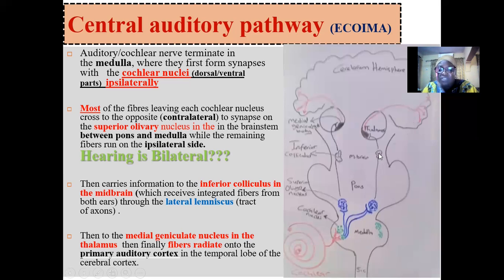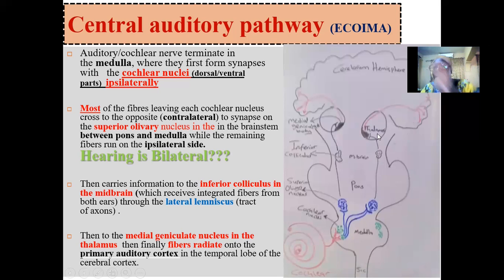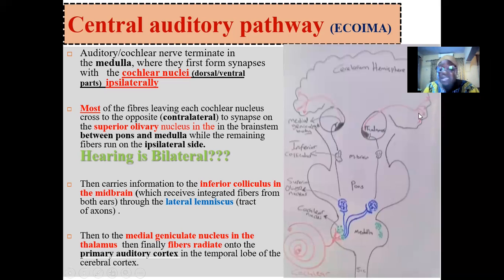After synapsing at the superior olivary nucleus, the fibers run upward to the inferior colliculus in the midbrain. From the inferior colliculus they enter the medial geniculate nucleus in the thalamus. The thalamus acts as a relay station with multiple nuclei where neurons are relayed before terminating on the cerebral cortex. The fibers are relayed through the medial geniculate nucleus and then terminate on the auditory cortex in the temporal region — where the auditory cortex is located — on both sides.